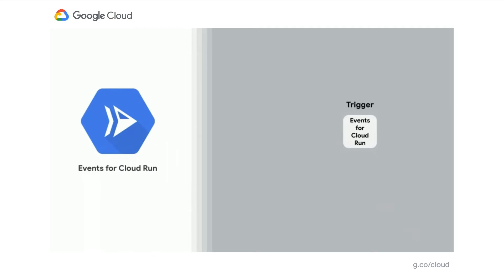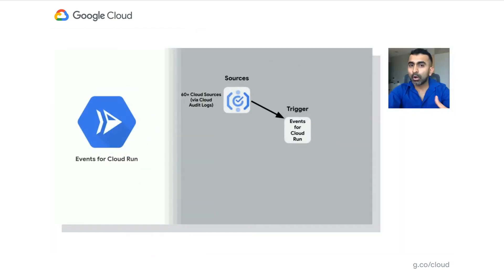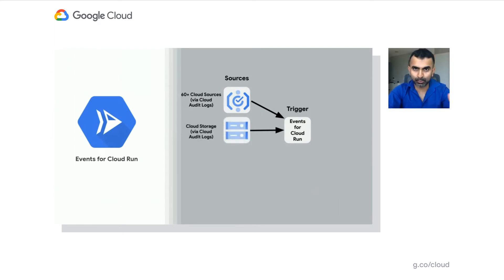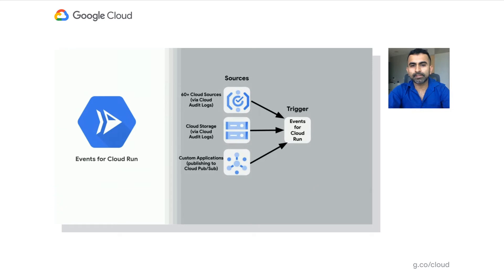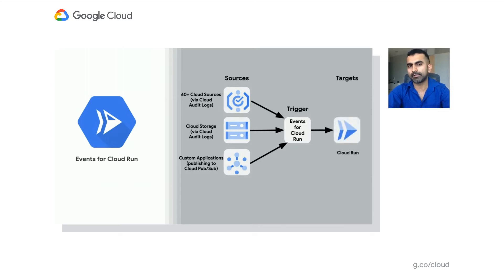With Events for Cloud Run, you can set up triggers to act on events sourced from all Google Cloud sources via Cloud Audit Logs — for instance, Cloud Storage. You can also act on events from custom applications that publish events to Cloud Pub/Sub. Events for Cloud Run delivers these events to Cloud Run targets.